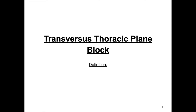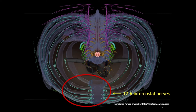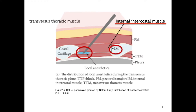The transversal thoracic plane block, formerly known as the parasternal plane block, is a new original anesthesia technique described since 2015. It provides analgesia of the anterior cutaneous branches of the T2 to T6 intercostal nerves to the medial anterior chest wall. Analgesia is provided via single injection of local anesthesia between the internal intercostal muscle and the transversal thoracic muscle, located in the 3rd and 4th or 4th and 5th intercostal space at the sternum.